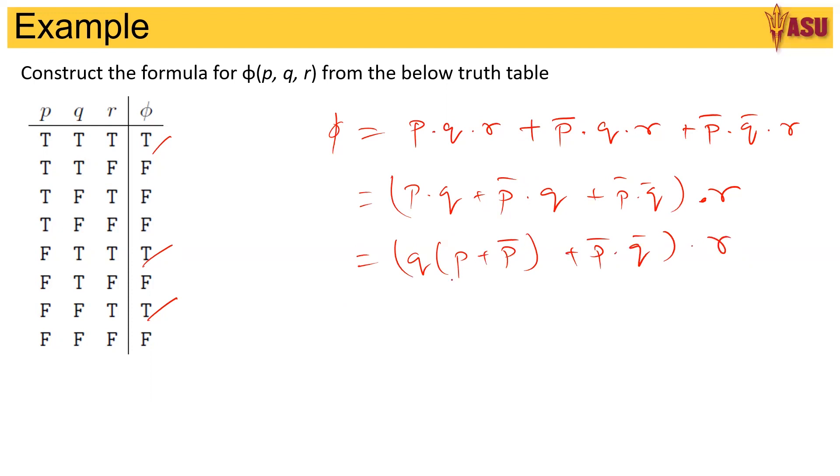Now this is p or p̄, so this is always true, so we can remove that and this will become equivalent to q + p̄·q̄ times r.